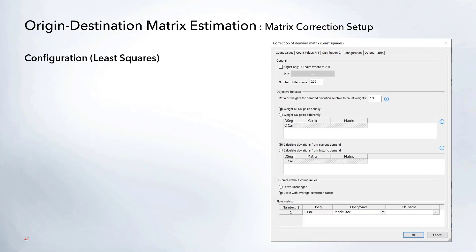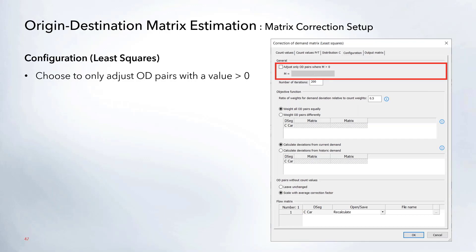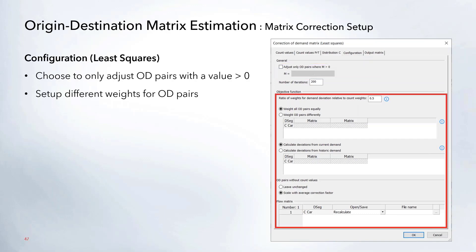Under Configuration, Least Squares and T-Flow Fuzzy again have some differences. The first option, the same for both, lets you lock down which OD pairs will be updated — you create a matrix with zeros and ones where any location with a one is an OD pair that can be adjusted. This way, OD pairs you want to keep can be set to zero while those you want to update are set to greater than zero. For Least Squares, you can also set up different weights for OD pairs, allowing you to place more weight on a particular OD pair.